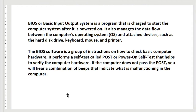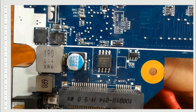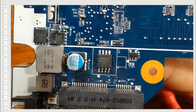The BIOS is a program that is loaded to start the computer system after it is powered on. It manages the data flow between the computer and the operating system, and with attached devices like keyboard, mouse, printer, hard disk drive, and optical disk drive. The BIOS is a group of instructions on how to check the computer hardware. There are many types of BIOS. The most commonly used BIOS has 8 pins, with pin 1 marked with a dot, pin 4 always connected to ground, and pin 8 always connected to VCC (3.3V).